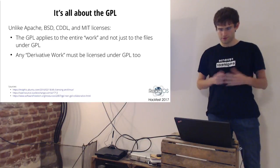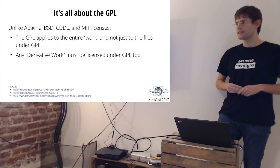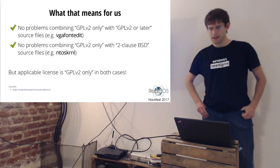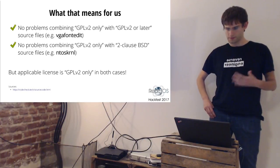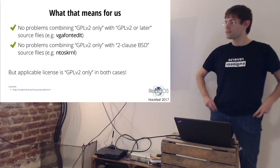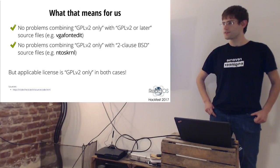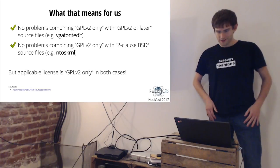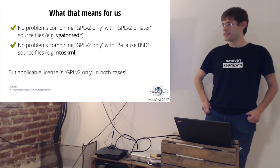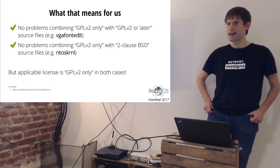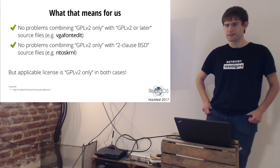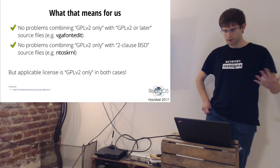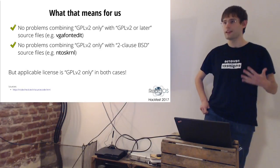We have to define what is an actual work, and the GPL also affects derivative works which are based on that work. We have no problems combining code that is GPL2-only with GPL2-or-later. For example, this is done in VGA font edit, which has one source file under GPL2-only and the rest under GPL2-or-later. We also don't have any problems combining GPL2-only code with two-clause BSD, which arose with the initial ARM work.